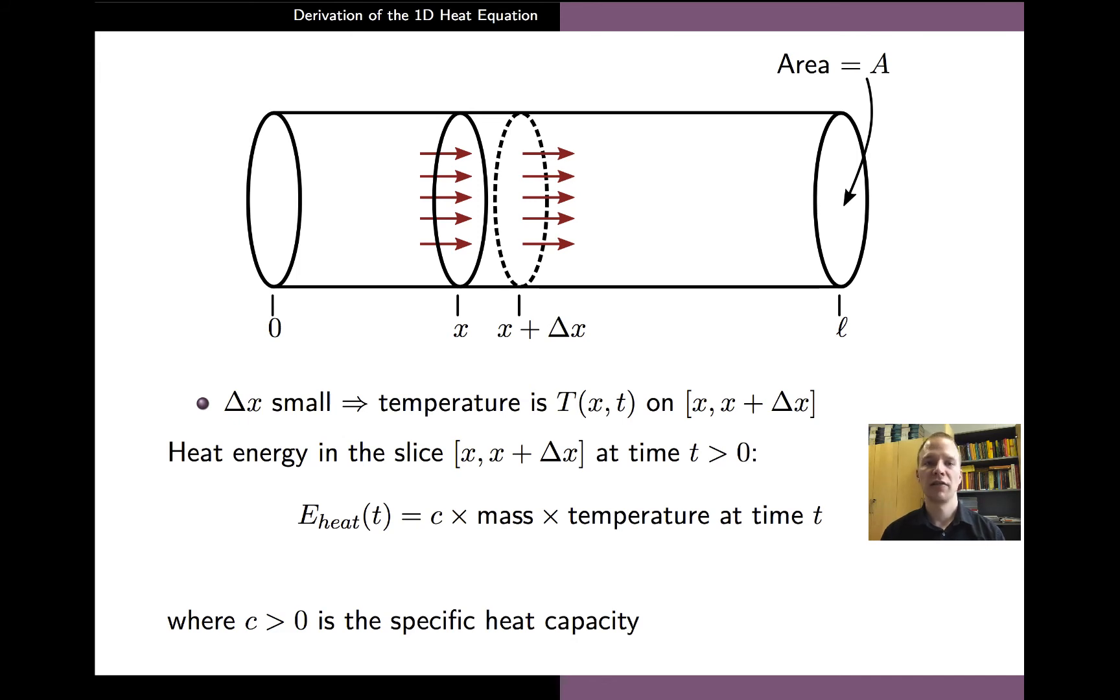And we can now compute the total heat energy contained in the slice of the rod. And this is given by the specific heat capacity of the material times the mass of the slice and its temperature. If we denote the cross-sectional area of the rod with capital A, we arrive at the following formula where rho is the mass density of the material.